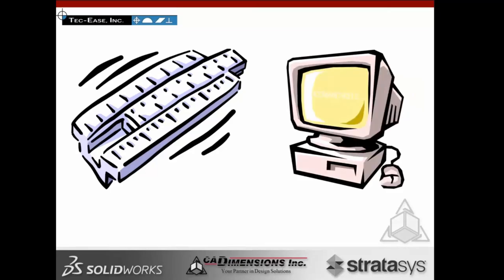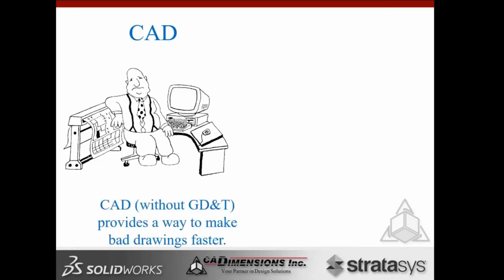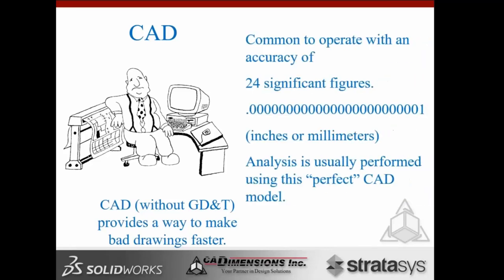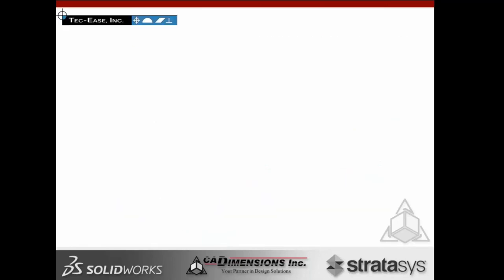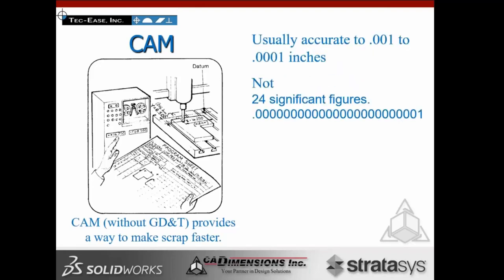CAD systems provide a way to make bad drawings faster. It's common to operate within an accuracy of 24 significant digits. Analysis is usually performed using the perfect CAD model, so we can be misled. CAD computer-aided manufacturing without GMP provides a way to make scrap faster — usually accurate within three to four significant digits, not 24. So there's already a huge gap between design and manufacturing.